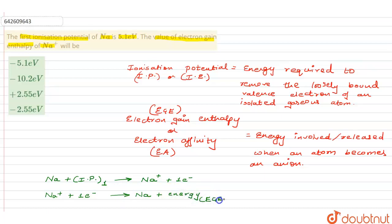So over here, in the first reaction, delta H is actually +5.1 electron volts. This is what this value means. And the reverse of this particular reaction is the second one, isn't it? And that means delta H in this case would be −5.1 electron volts. In short, the electron gain enthalpy value is how much? −5.1 electron volts. So that means the value of electron gain enthalpy of Na+ will be?